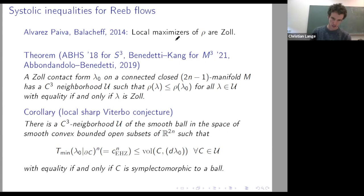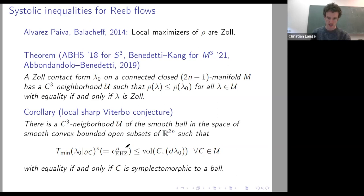Abbondandolo and Benedetti generalized this to all dimensions by a different technique: a local normal form of a Zoll contact one-form. As one corollary, you get a local sharp version of the Viterbo conjecture: there is a C³ neighborhood of the smooth ball in the space of smooth convex bounded open subsets of ℝ^(2n) such that the minimal length of a closed characteristic on the boundary is bounded by the contact volume. They show this holds for any capacity, not only the cylindrical capacity, with equality if and only if C is symplectomorphic to a ball.